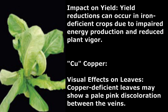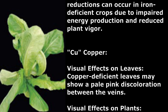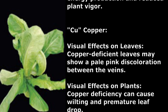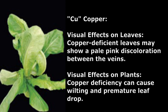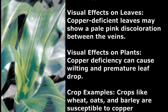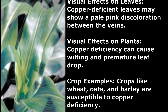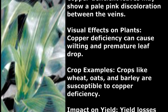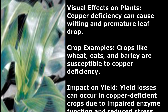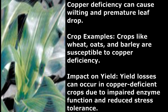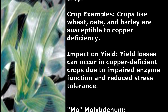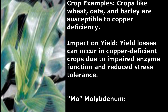Copper. Visual Effects on Leaves: Copper-deficient leaves may show a pale pink discoloration between the veins. Visual Effects on Plants: Copper deficiency can cause wilting and premature leaf drop. Crop Examples: Crops like wheat, oats, and barley are susceptible to copper deficiency. Impact on Yield: Yield losses can occur in copper-deficient crops due to impaired enzyme function and reduced stress tolerance.